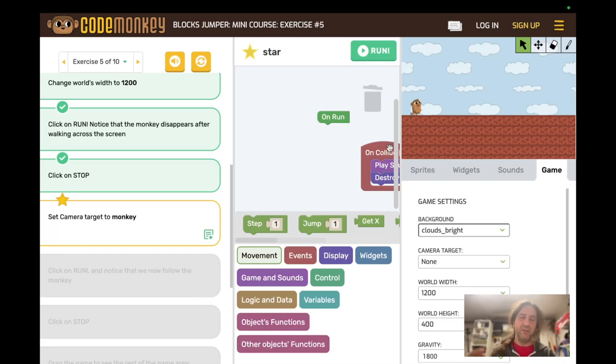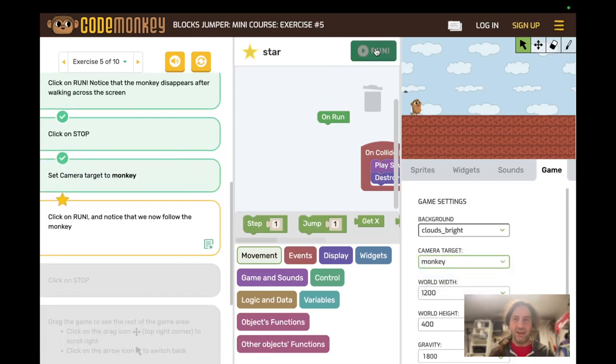Now the instruction comes up and you hit stop. You have to wait for it to tell you to. If you don't wait for it to tell you to you stop, start, stop, start. Eventually you have to start it and have it go far enough to trigger the instruction. Now camera target to monkey. That's also in the game tab. Camera target monkey. Now run.